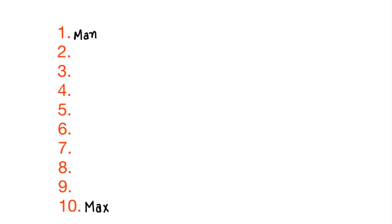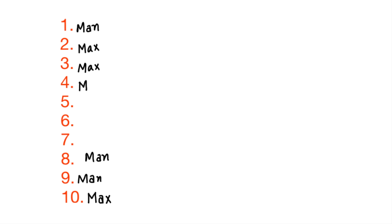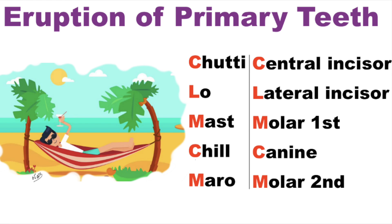Since the topmost one is mandible, next one would be maxilla — but here instead of one time, we will write maxilla for two times. And exactly the same thing at the bottom, we will write mandible for two times. Then the fourth one would be mandible, fifth would be maxilla, sixth is mandible, seventh is maxilla, and eighth is mandible.